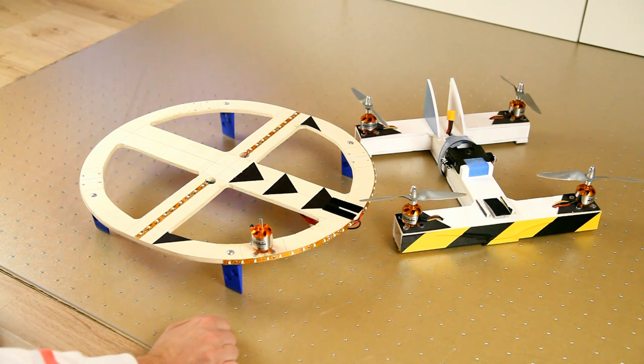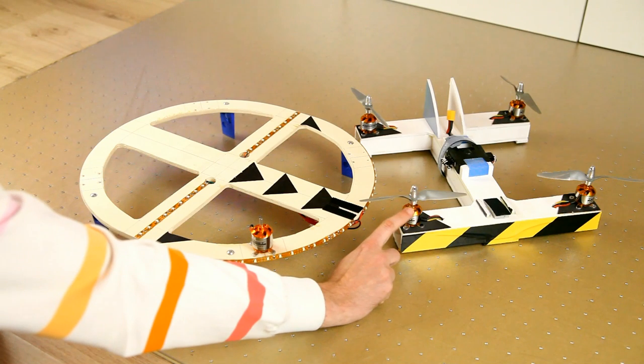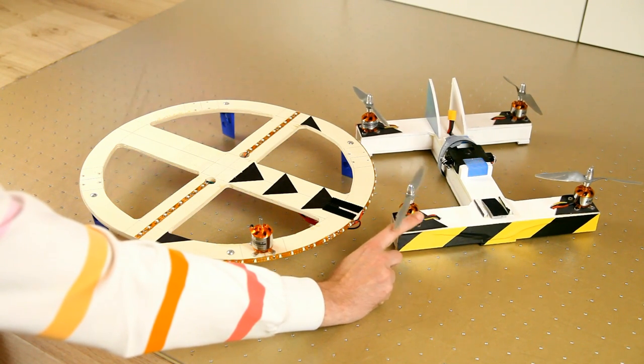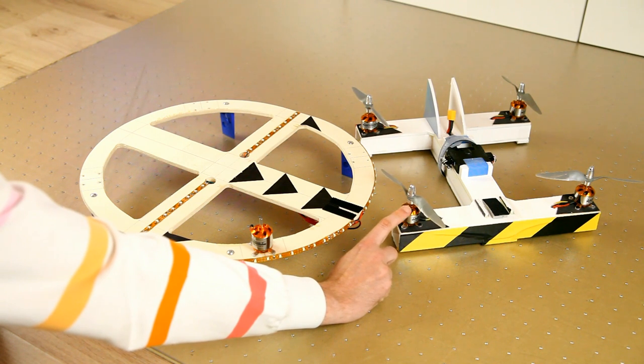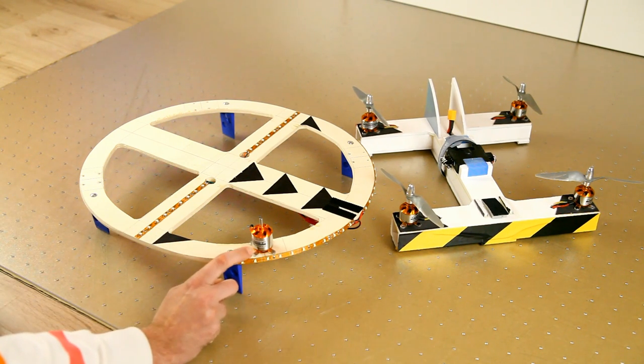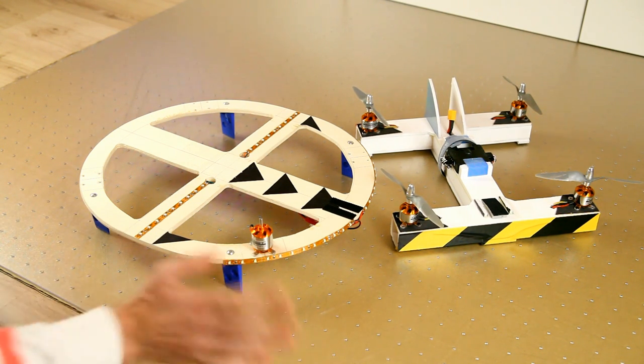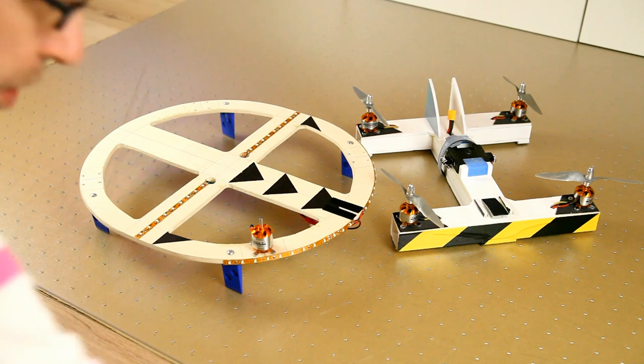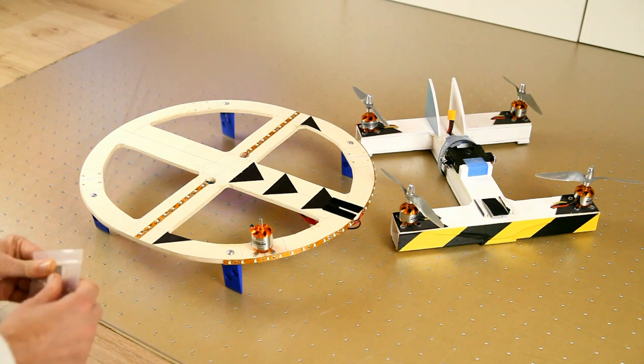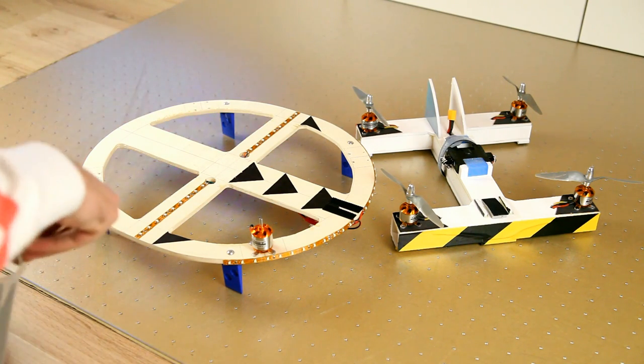And another difference is that these are 2200 kV motors. So pretty high kV. These are 1100. So approximately half, exactly half. And that also means of course that I'll be using bigger propellers on this new quadcopter.